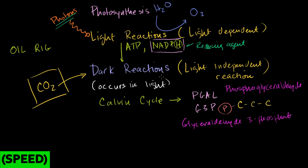Let's try to dig a little bit deeper and understand what's actually going on in these stages of photosynthesis. Remember, we said there are two stages: the light-dependent reactions, and then the light-independent reactions. I don't like using the word "dark reaction," because it actually occurs while the sun is outside — it's occurring simultaneously with the light reactions. It just doesn't need the photons from the sun.